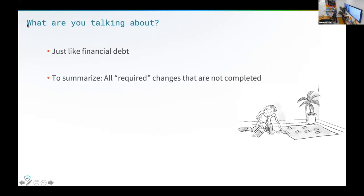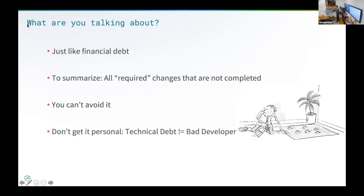Technical debt covers all required changes that are not yet done. The good news is that you can decide how you want to handle it and whether you want to reduce it, but the bad news is that you can't avoid it. You can spend days and days working on something and you will still have some technical debt somewhere — and it's not bad. Don't take it personally; technical debt does not mean that you are a bad developer. Even the best developer will have technical debt in their project. That's just something you can't avoid because you are not perfect. Maybe someday we will be replaced by a machine that will code for us perfectly, but as long as we are human, we make mistakes.